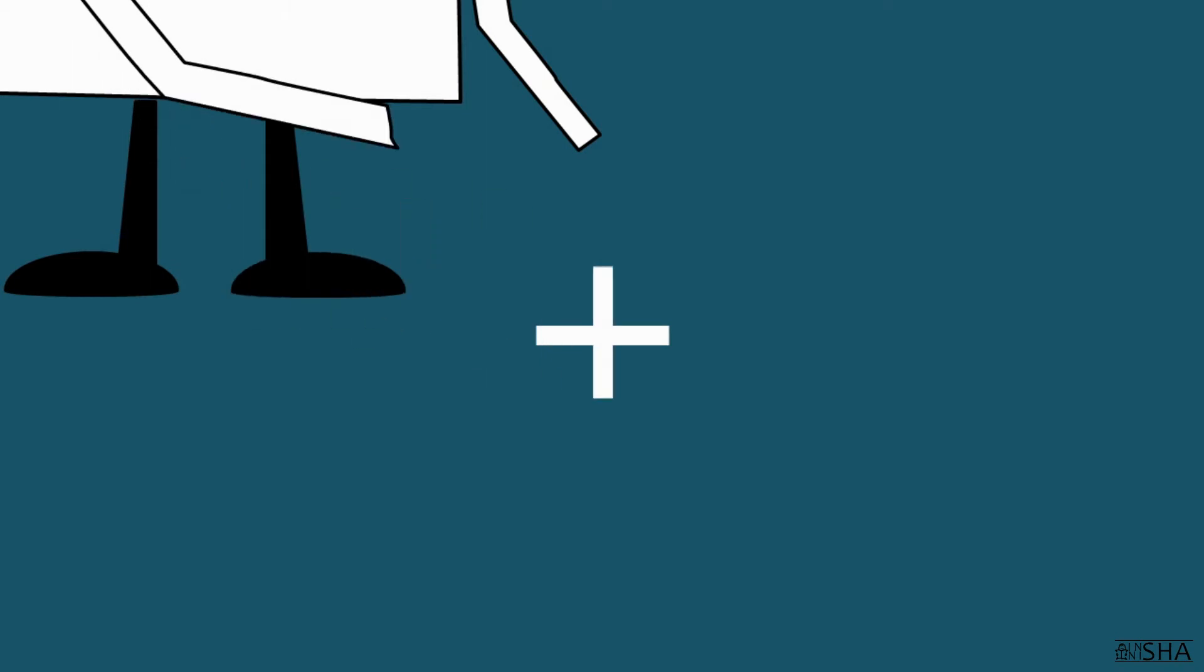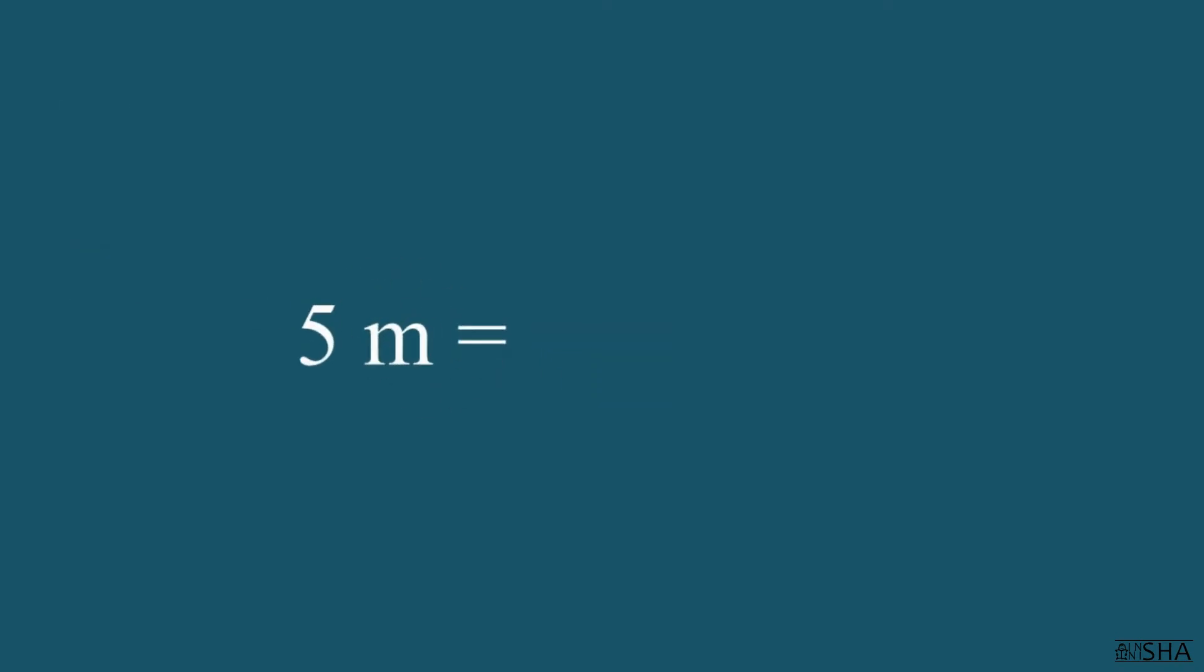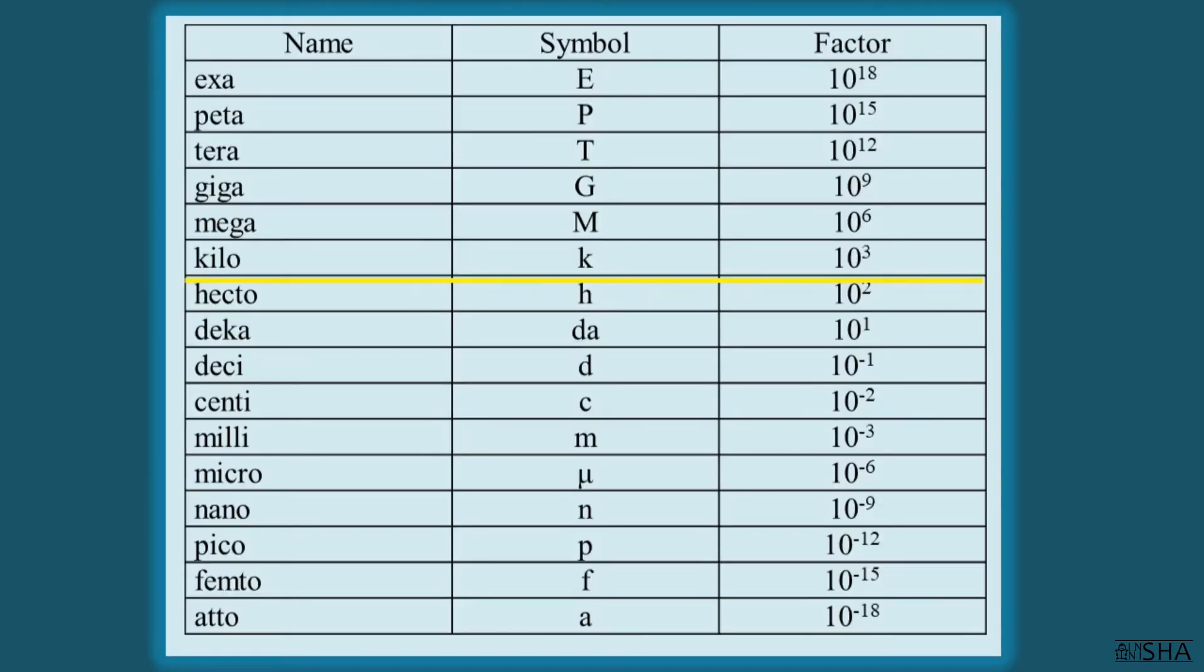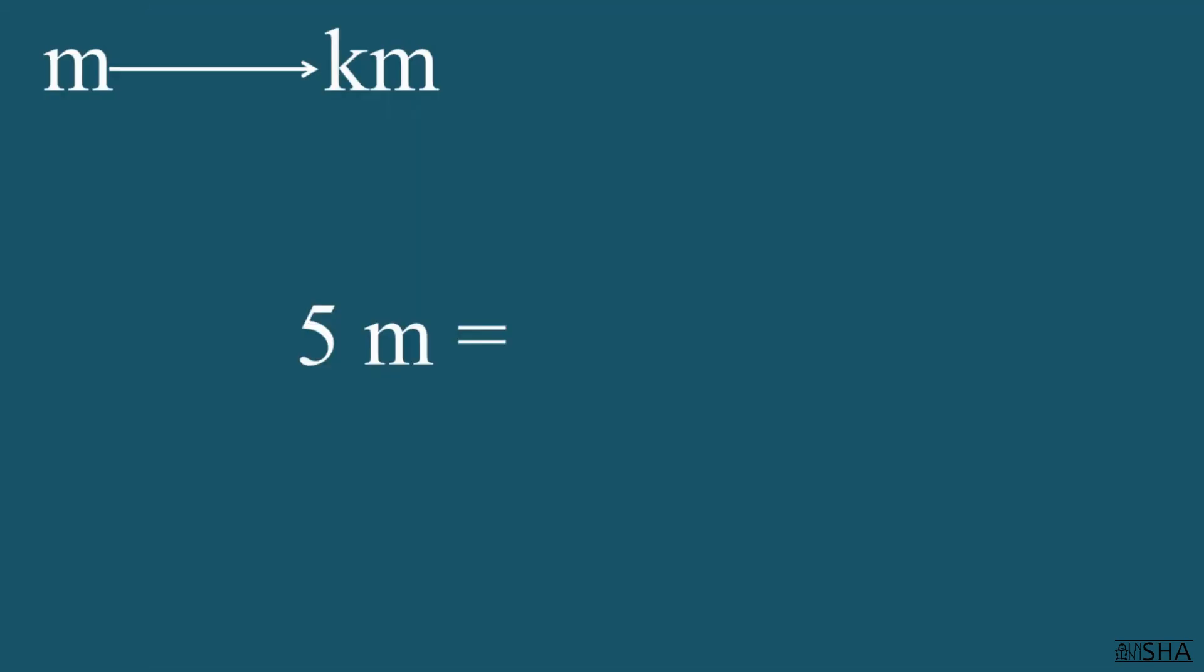For example, convert 5 meters to kilometers. We write 5 and multiply it by 10 to the negative 3rd power. See, the sign of the power was changed to the opposite one.